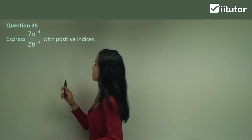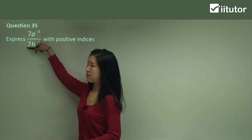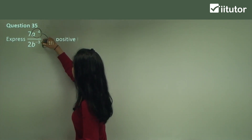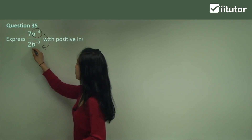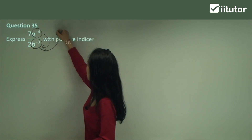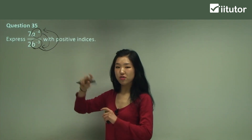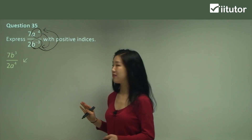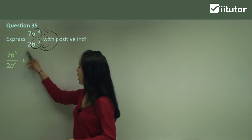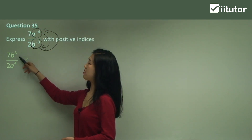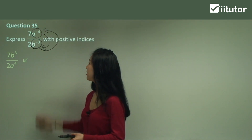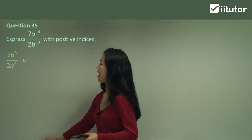Question 35. 2 doesn't divide into 7, so we won't worry about the coefficients. This one is negative index, so we're going to bring it down to the denominator. This one also has a negative index, which is on the denominator, so we simply move it up to the numerator and change the sign. We're actually going to swap the two terms but simply change the sign to all positive. So 7 and 2 remain as they are. On the numerator now we have B to the power of positive 3, and on the denominator we have A to the power of positive 4.